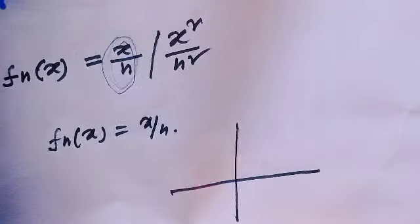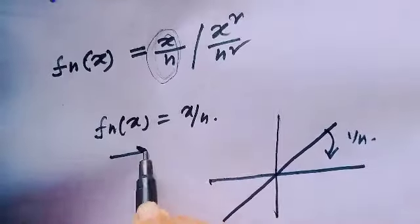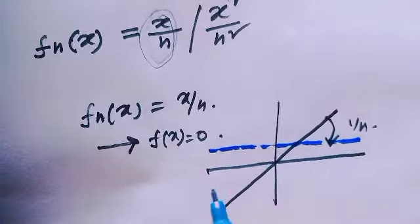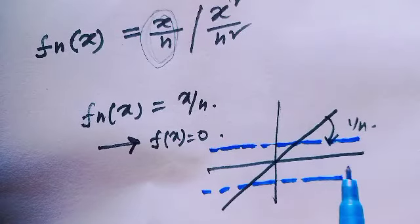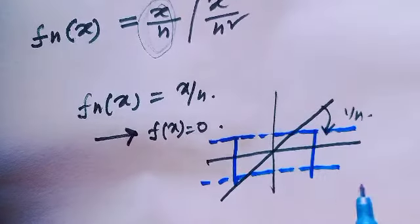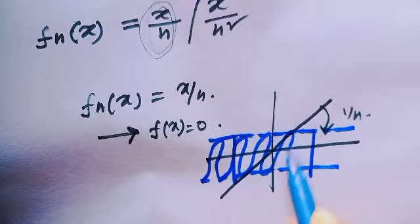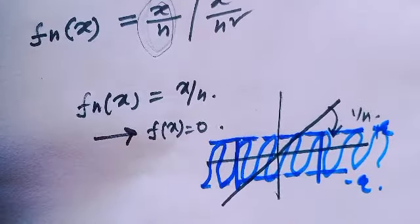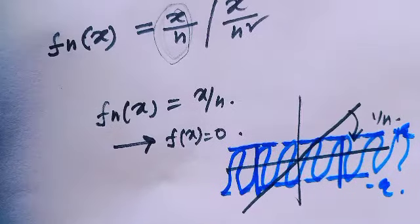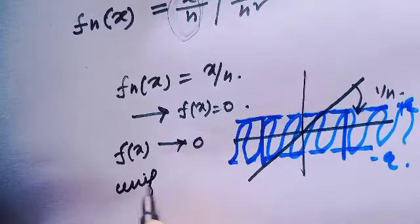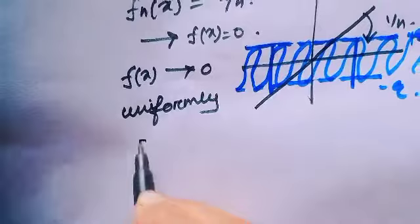Consider fn(x) = x/n. Looking at the graph, this is a straight line with slope 1/n. Obviously this sequence of functions converges to f(x) = 0. If you consider any epsilon-neighborhood around f(x) = 0, then for any closed and bounded interval, after some stage all the functions belong to this neighborhood. That means fn converges to 0 uniformly on any closed and bounded interval.